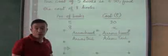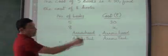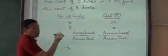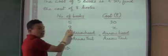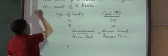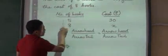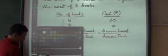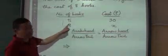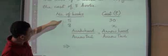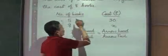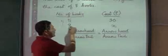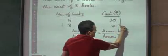Now coming to the arrow — the arrow head will always point to the bigger number. For example, number of books: 5 books and 8 books. 8 is the bigger one, so the arrow head is going to point downwards. Over here, 8 is the bigger number — this is the arrow head and this is the arrow tail. Similarly, when we go to the cost column, the cost of 5 books is 30, and practically speaking, the cost of 8 is going to be more, so x is going to be more and our arrow head is again pointing downwards.